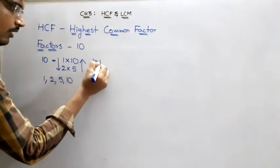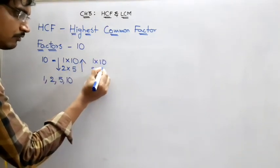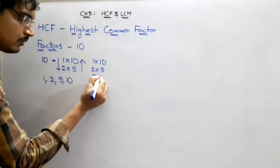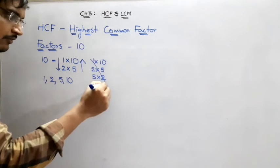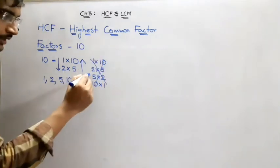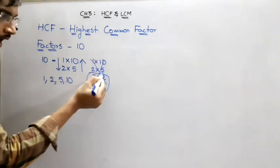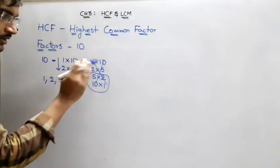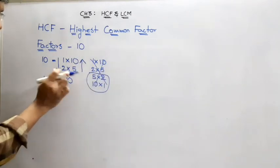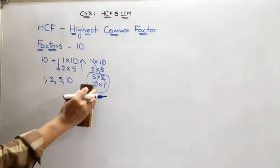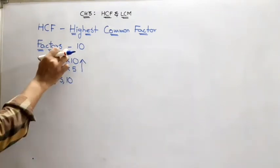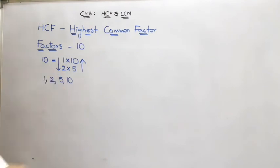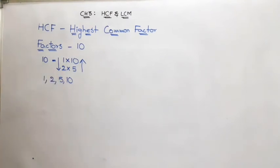So 1×10 and 2×5 give us 10. In which multiplications we got the value of 10, I wrote them here, and instead of repeating 5×2 and 10×1 again, we are taking those as common by showing arrows. The factors of 10 are 1, 2, 5, and 10.